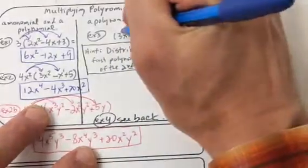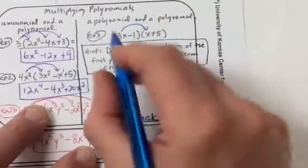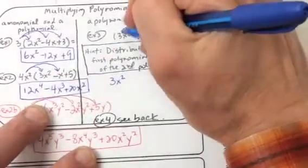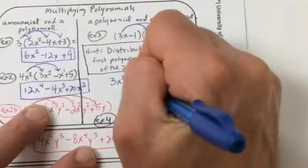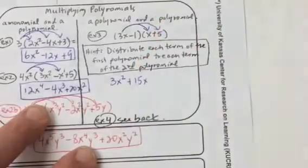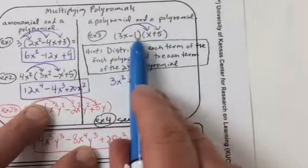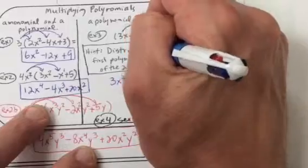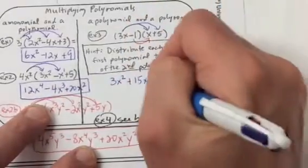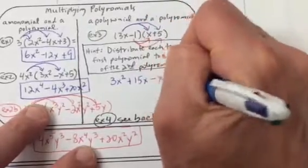What that means is we take our 3x and we multiply it by the first term. 3x times x is 3x squared. Then we take it and multiply it by the next term. So, 3x times 5 is 15x. Then we're going to take the next term of the first polynomial and multiply it by each term of the second. So, negative 1 is our next. Negative 1 times x is negative x. Negative 1 times 5 is negative 5.